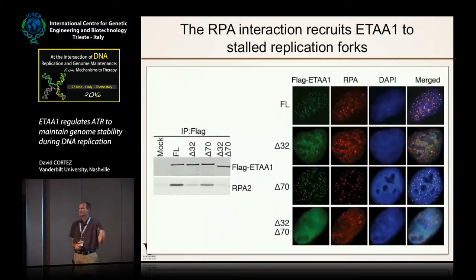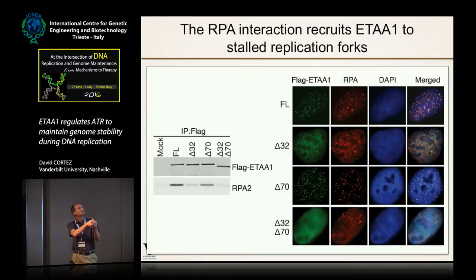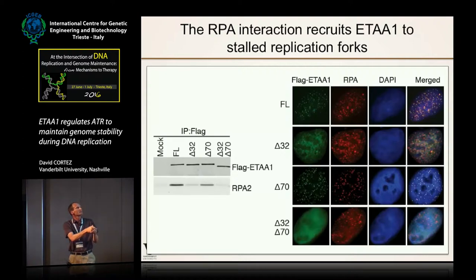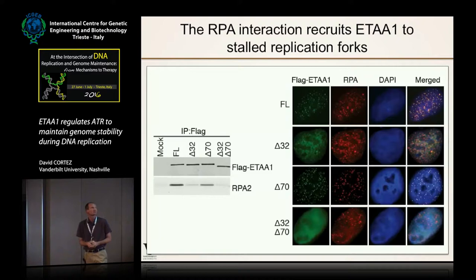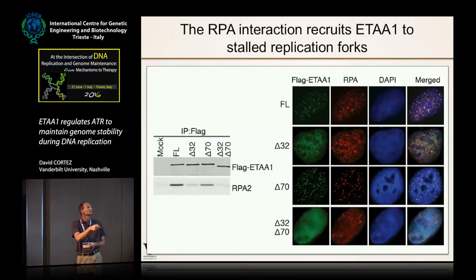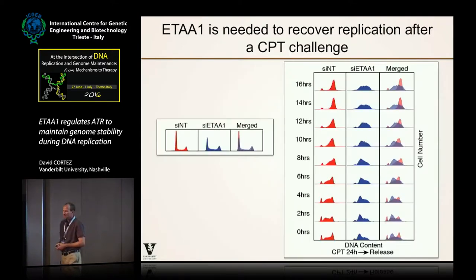Those interactions are what brings ETAA1 to stalled replication forks. One observes very beautiful foci of this protein when it's expressed in cells treated with DNA damaging agents, and they co-localize with RPA. If we delete just the C-terminal RPA32 interacting motif, we lose a lot of that localization. If we delete the RPA70N binding motif alone, we see little difference. But if we delete both motifs in the same protein, we completely abrogate the ability of ETAA1 to localize to stalled replication forks — confirmed also by co-IP data.